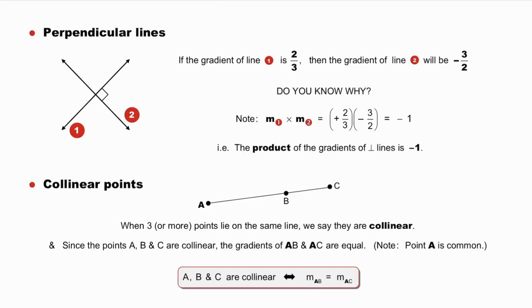Lastly, collinear points. When three or more points lie on the same line, we say they are collinear. And since the points A, B, and C are collinear, the gradients of AB and AC are equal. Note, point A is common. Again, we have a reversible statement, and we use that symbol to say that collinear points imply equal gradients, but equal gradients also imply collinear points.